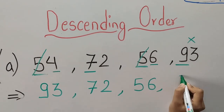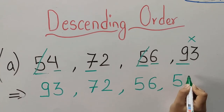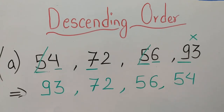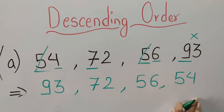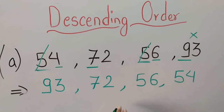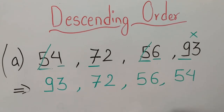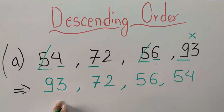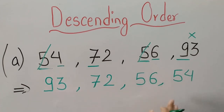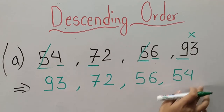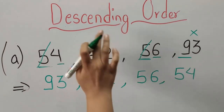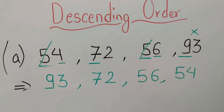So we will write 56, and then the last remaining one is 54. In these numbers, 93 is the biggest number and 54 is the smallest number — this is the descending order.